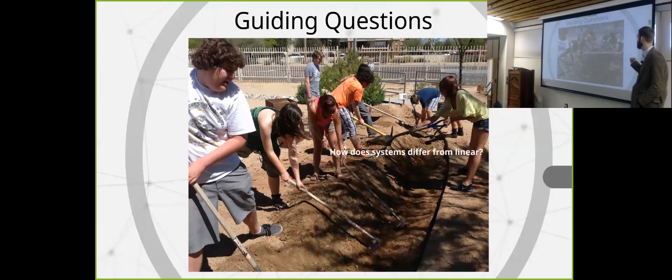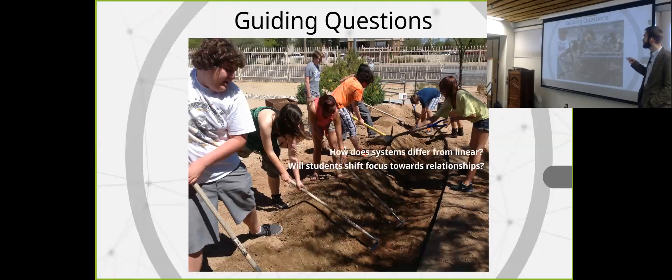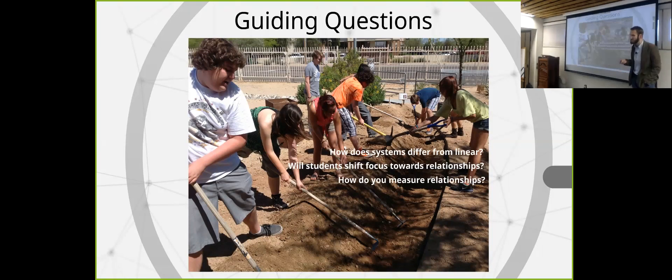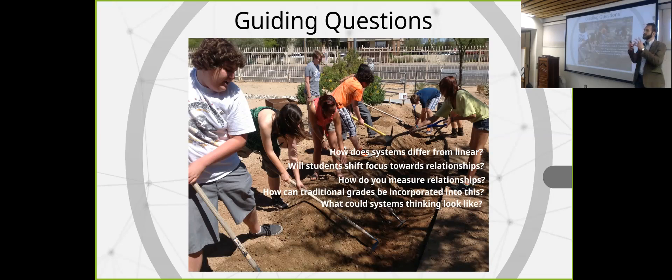So my guiding questions throughout this research, and you'll be seeing images of the students doing work throughout this presentation, is how do systems differ from linear? So obviously, linear is the opposite construct of systems thinking. How can I possibly get, and will students voluntarily shift their focus from individual concepts and assignments to looking at the relationships between concepts? And if they are able to do that, how do you actually measure that?